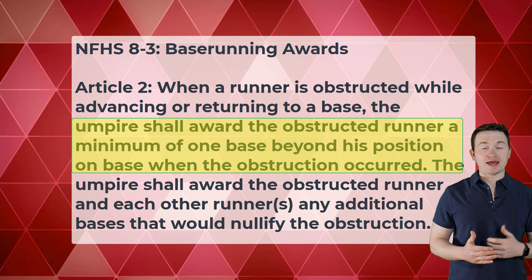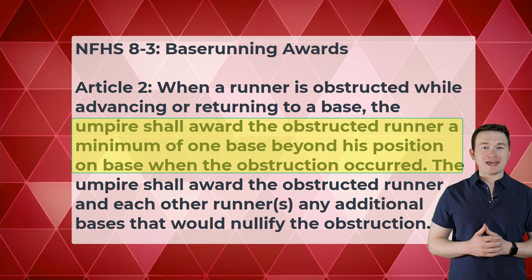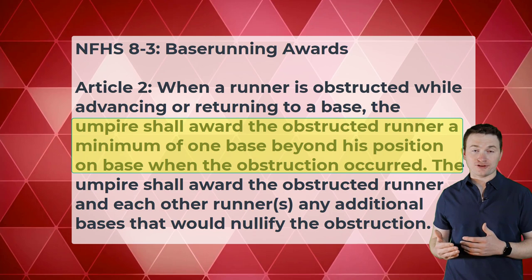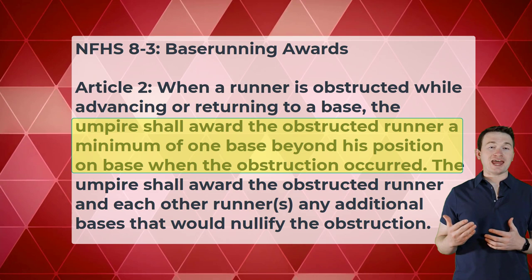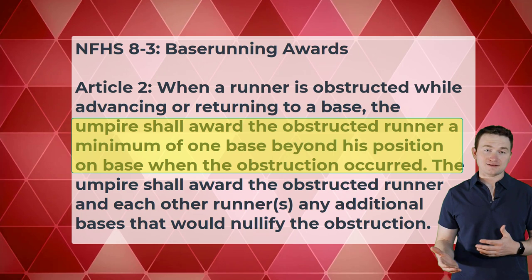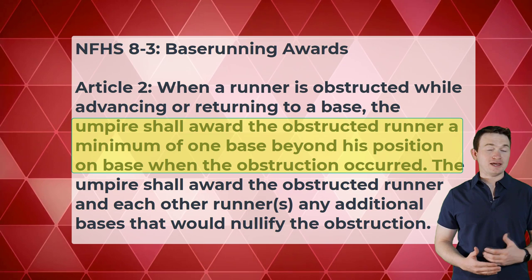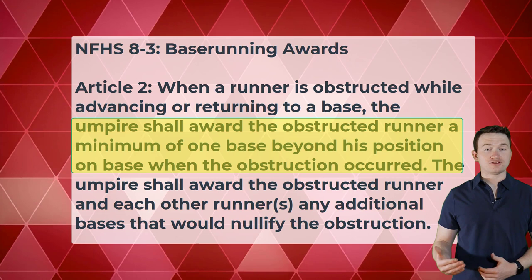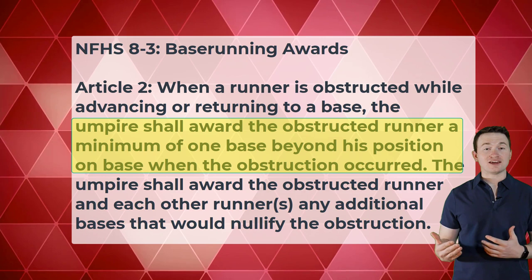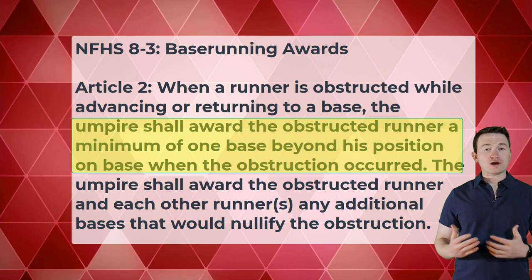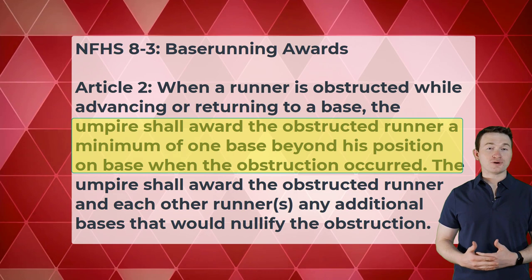The major problem is the automatic award. The umpire shall award the obstructed runner a minimum of one base beyond his position on base when the obstruction occurred. This makes sense if we have a play being made on the runner, just like Type 1 obstruction in OBR. But what about the Type 2 case play? Would it really be fair to award R2 home when R2 was already headed back to third? My answer is no. On a play like this, the integrity of the game is held up by doing what's common sense — putting the runner at third base. But how do we keep the integrity of the game when using a rule that's written this way?